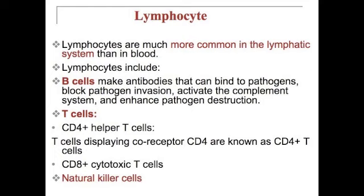Lymphocytes are much more common in the lymphatic system. They block pathogen invasion, activate the complement system, and enhance pathogen destruction. Another type of lymphocyte is the T-cell — we know these as CD4 and helper T-cells. T-cells displaying the co-receptor CD4 are known as CD4+ T-cells. CD8+ cytotoxic T-cells are another type, and natural killer cells are also classified as T-cells.